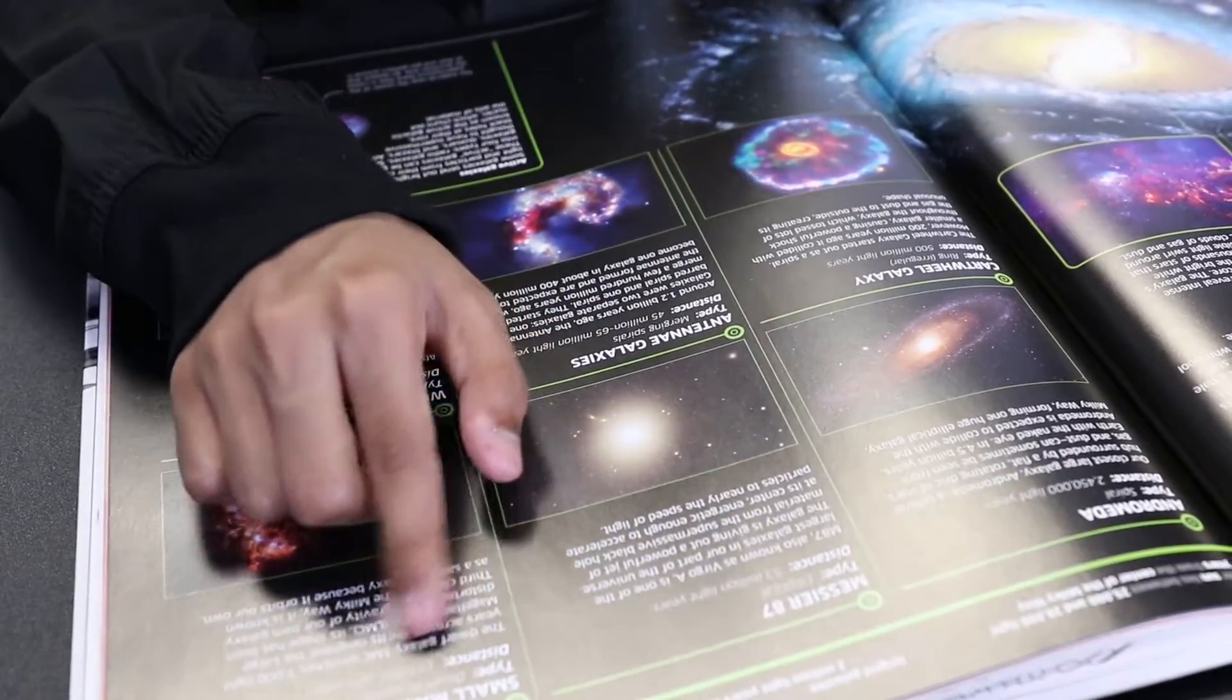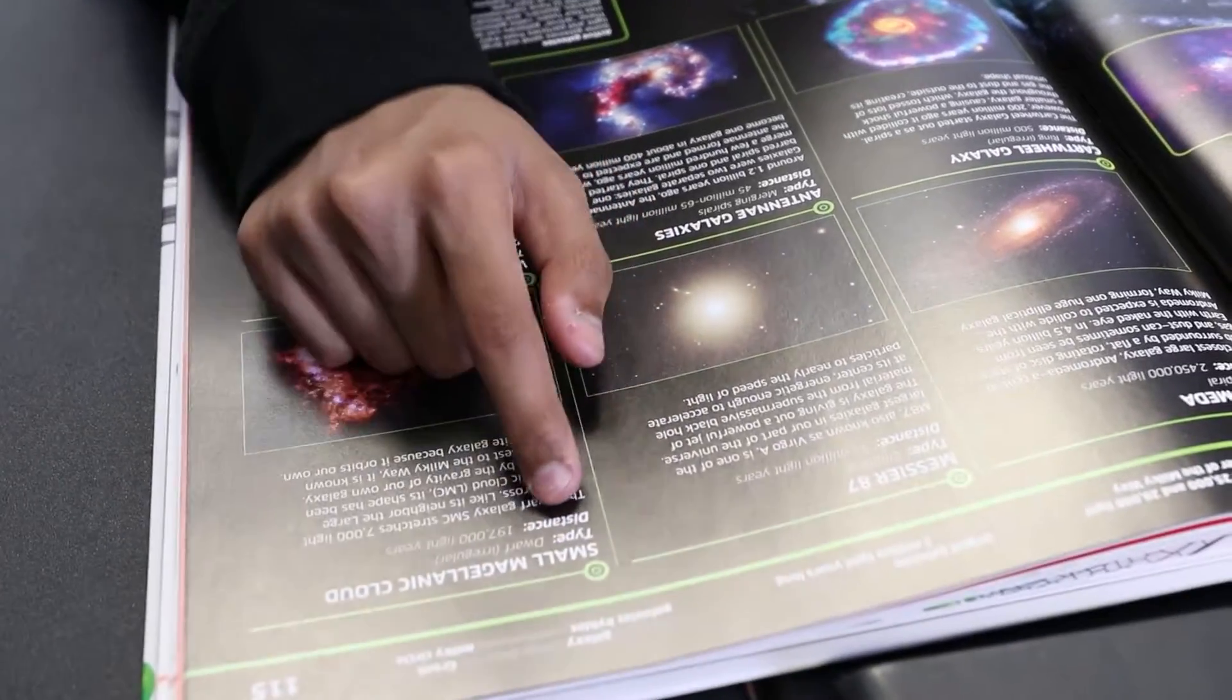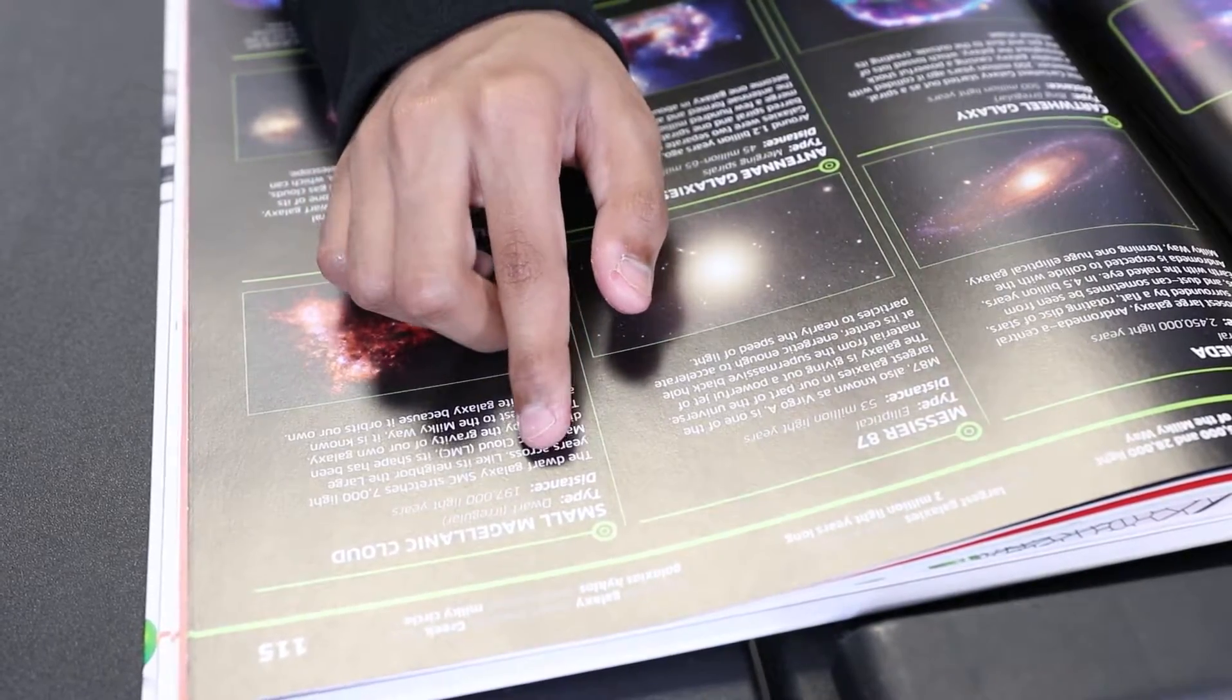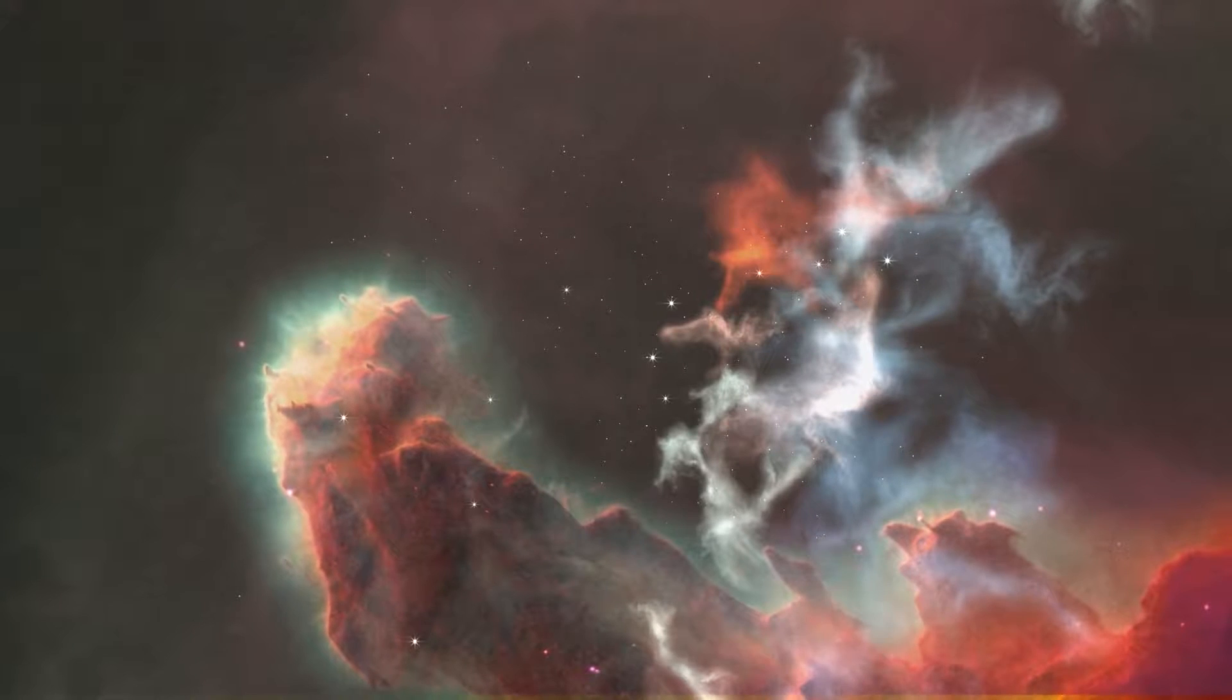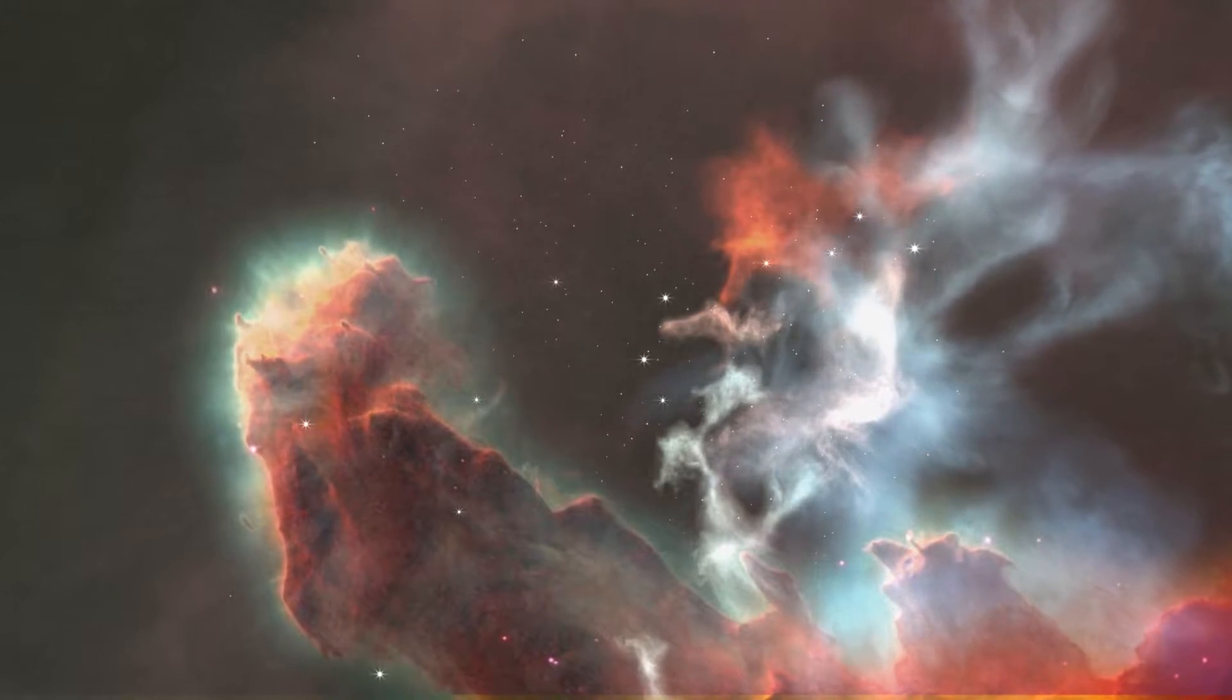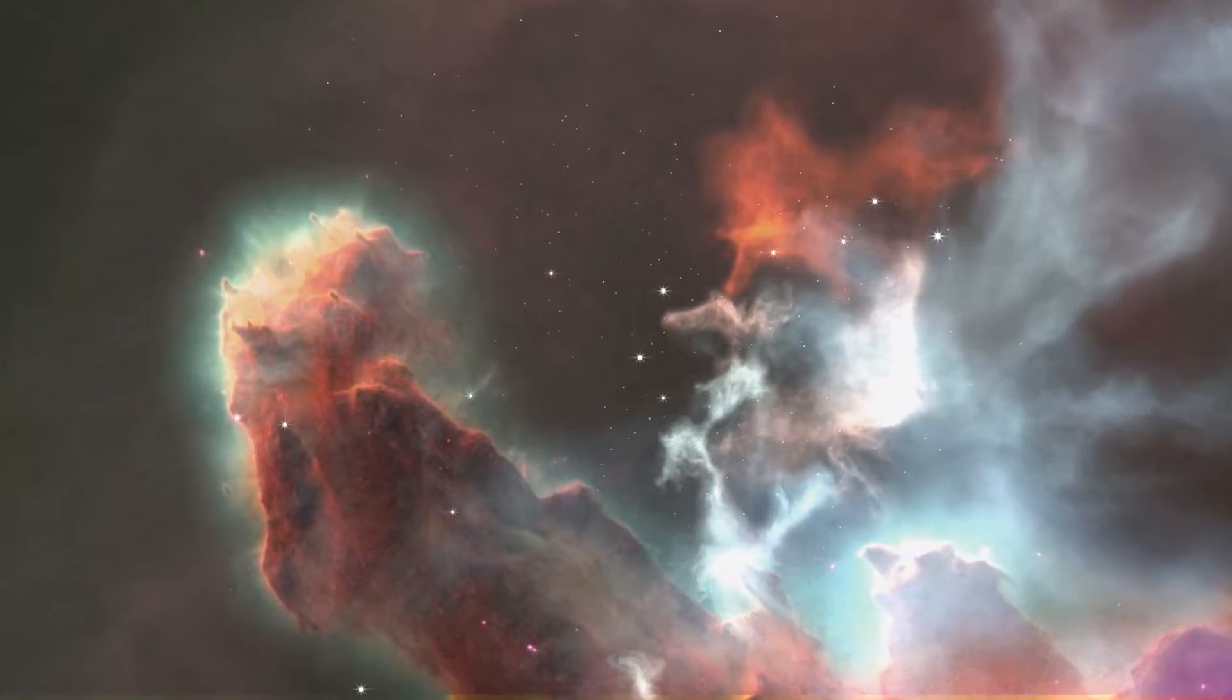And this is the Small Magellanic Cloud. It is like where stars are born. This is type of dwarf irregular at a distance of 200,000 light years away from us. This dwarf galaxy, SMC, stretches 7,000 light years across.